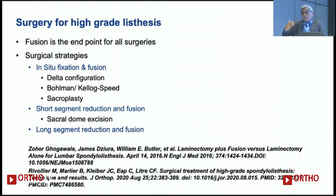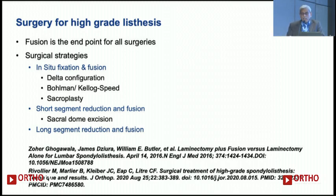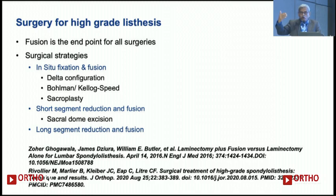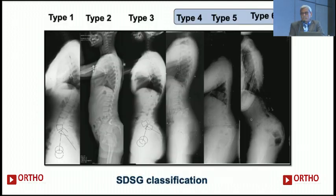The surgical strategies are broadly divided into three. One is in-situ fixation and fusion — there are several ways of doing it: a delta configuration, a Bollman technique, a Kellogg speed technique, and a sacroplasty technique we were doing some 20 years ago. There is a short segment reduction technique where you do an L5-S1 spondylolisthesis reduction and fusion. You have a long segment where you might want to go to L4, or a very long segment where you might put temporary screws into L1 as well.